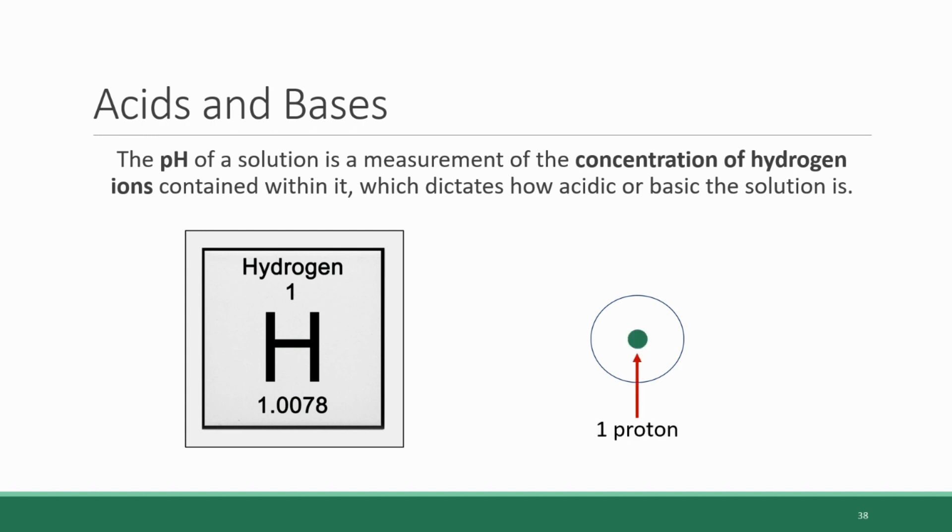When this happens, all that is left behind is the proton in the nucleus. This free floating proton is the hydrogen ion, and the concentration of these things is what the pH scale measures in any given substance.